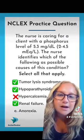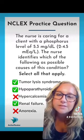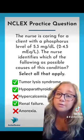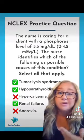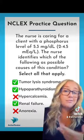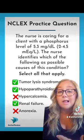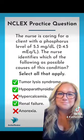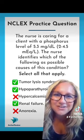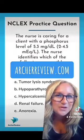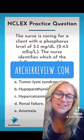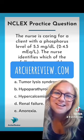Lastly, E, anorexia — a loss of appetite is false. When we lose our appetite and don't eat very much, we don't take in very many electrolytes, and our Phosphorus level will actually go down, not up. A, B, and D are correct. Great work, Archer nurses. We'll see you for more practice at archerreview.com.